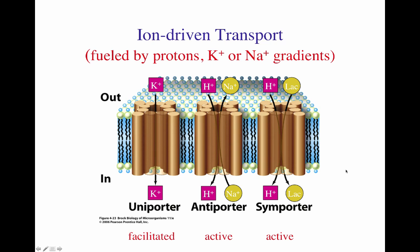Uniporters let one solute move in by its concentration gradient. An antiporter allows protons inside the cell while forcing sodium ions out against their concentration gradient, using the proton motive force to power the efflux of sodium. A symporter — like the lactose permease — uses the proton gradient to bring lactose inside, because both molecules are going in the same direction. The antiporter has one molecule going in and the other going out. These transporters usually have about 12 alpha helices spanning the entire membrane, making them very specific about the solute being transported.